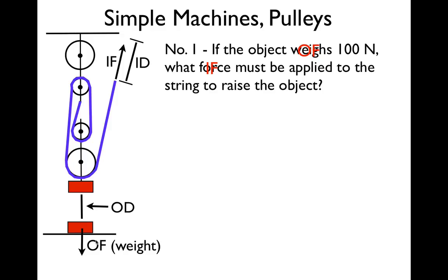We have this object which weighs 100 newtons and we want to know how much force we have to apply. We can figure out the mechanical advantage really quickly because it's a pulley — we just count the strings as they go across: one, two, three, four. Simply count the number of strings across the middle. There are four strings supporting that weight, that output force, and that means the mechanical advantage is four.